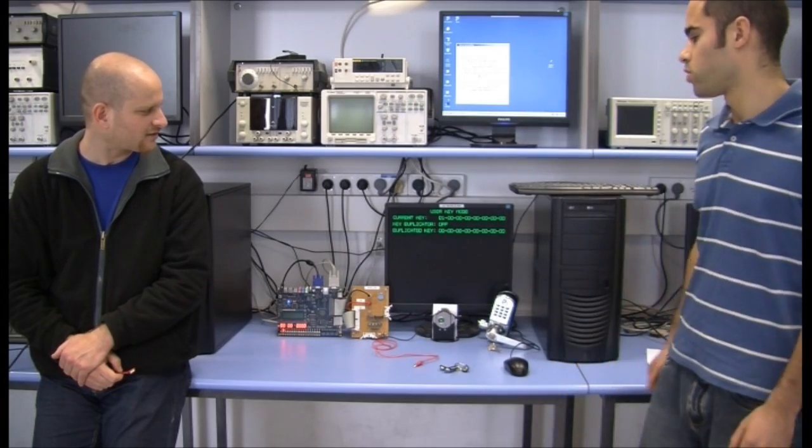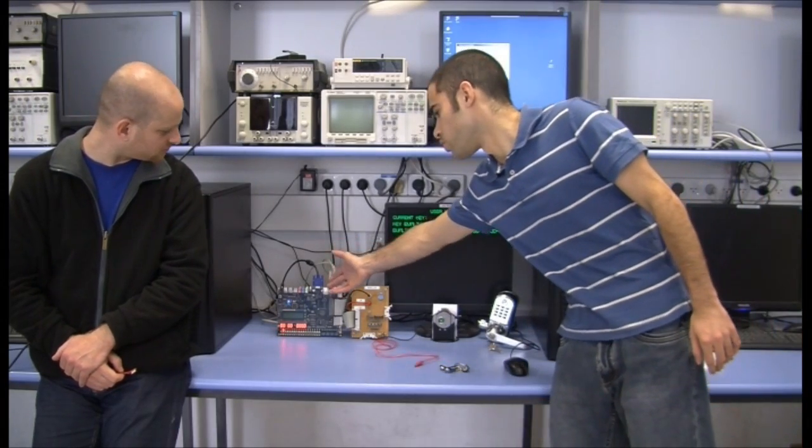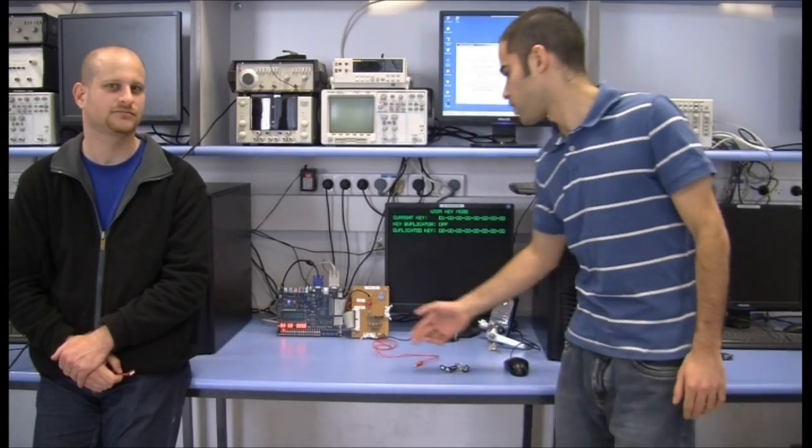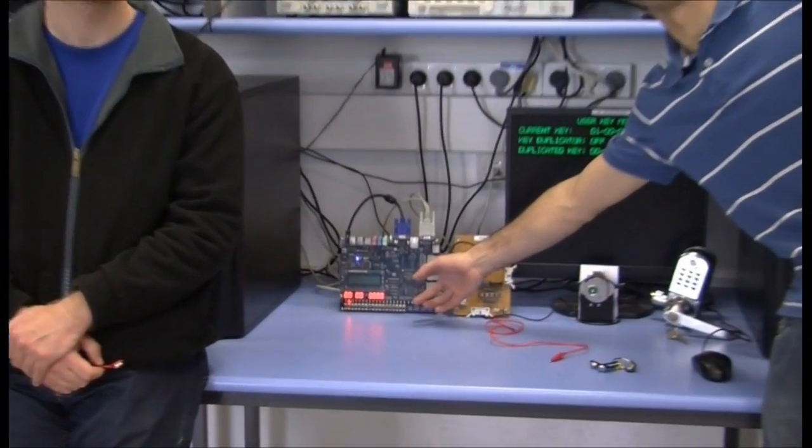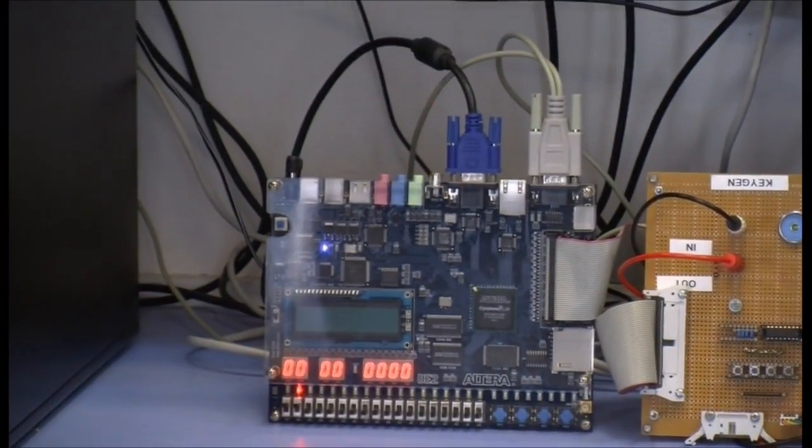To implement our project we used a Cyclone board from the Cyclone 2 family. On the Cyclone board there is an FPGA chip which we built our VHDL code on.